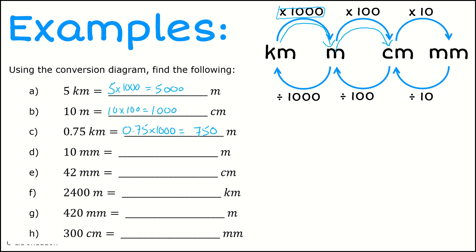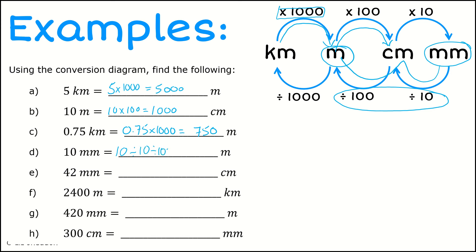Part D: 10 millimeters to meters. So I want to go from millimeters to meters — I need to do both steps. I'm going to divide by 10 and then divide by 100. So 10 divided by 10 is 1, and 1 divided by 100 is 0.01.